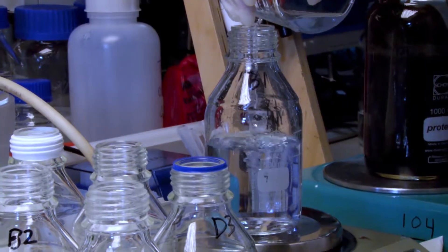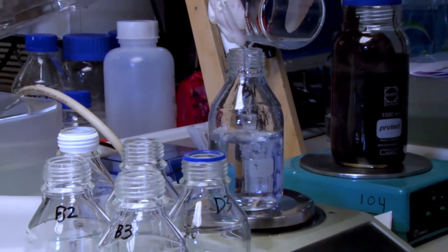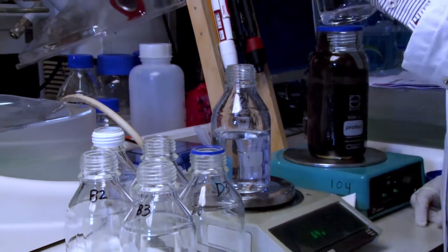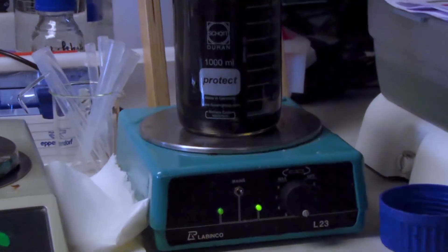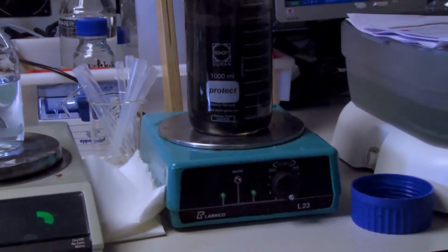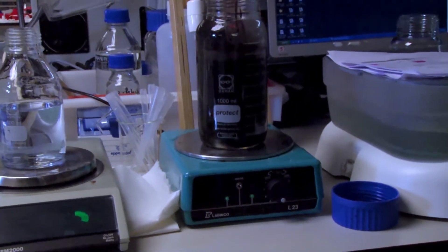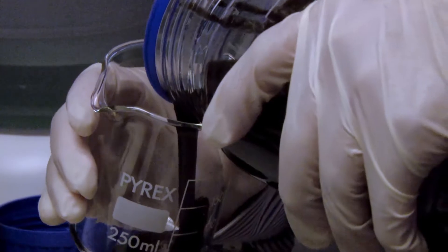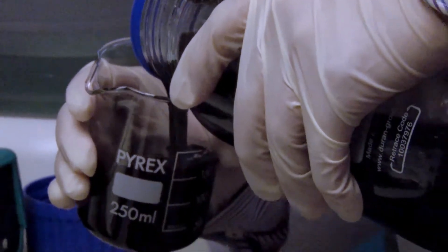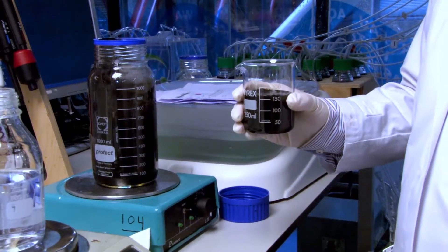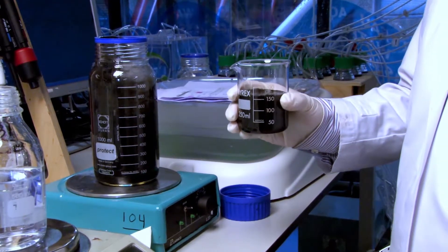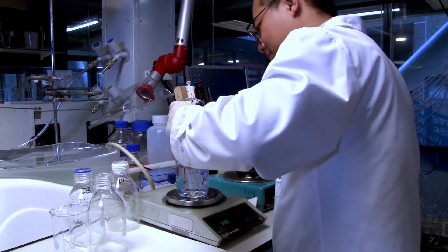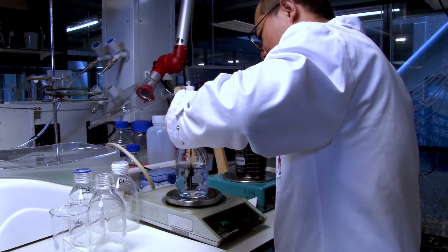For the blanks, using a balance, first weigh and fill the bottle with the calculated amount of media. Weigh and fill the bottle with the calculated amount of sludge to be tested. Prepare the other two bottles of the blank group in the same way.